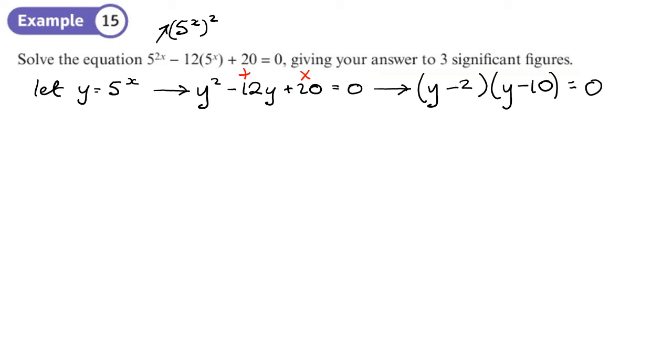Right so what does that mean? That means that y is equal to 2 here, y is equal to 10 here. Now we said that y was 5 to the power x. So what have we got, we've got from here 5 to the power x equals 2. From here 5 to the power x equals 10.